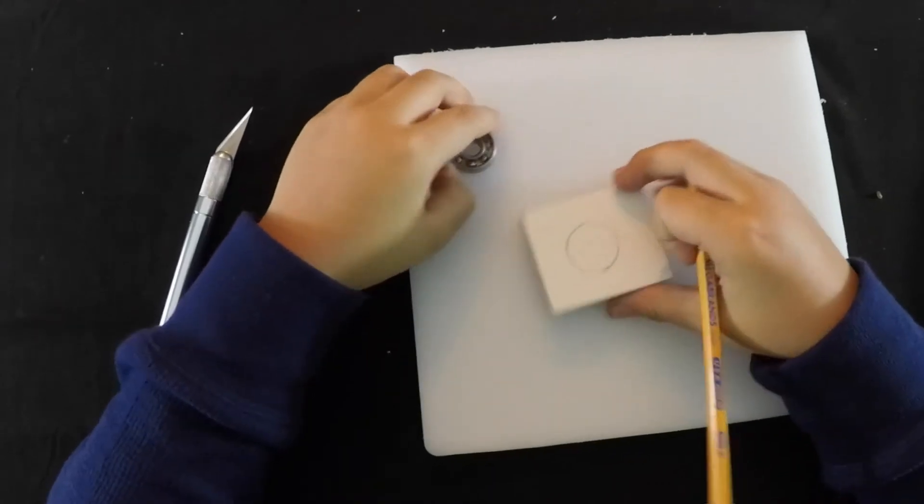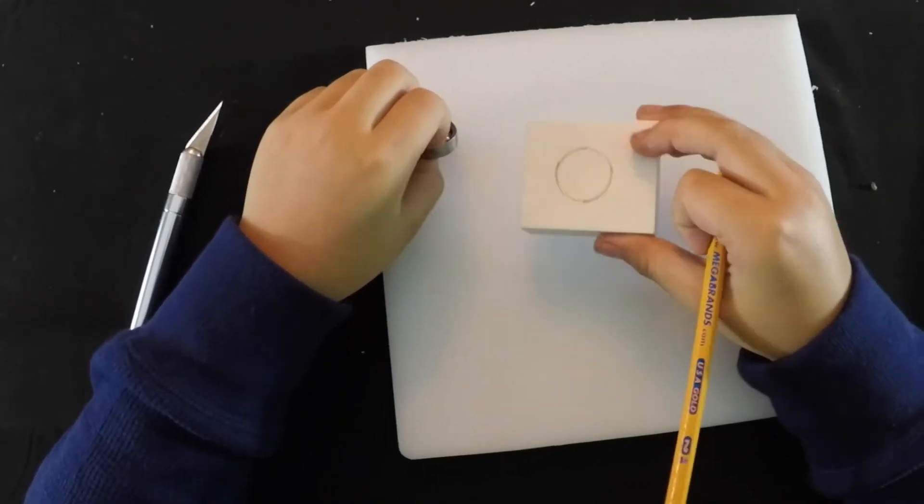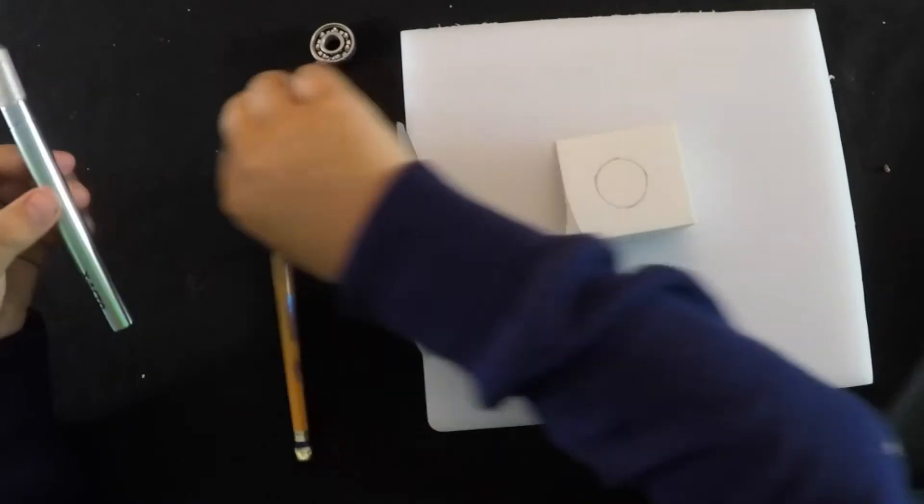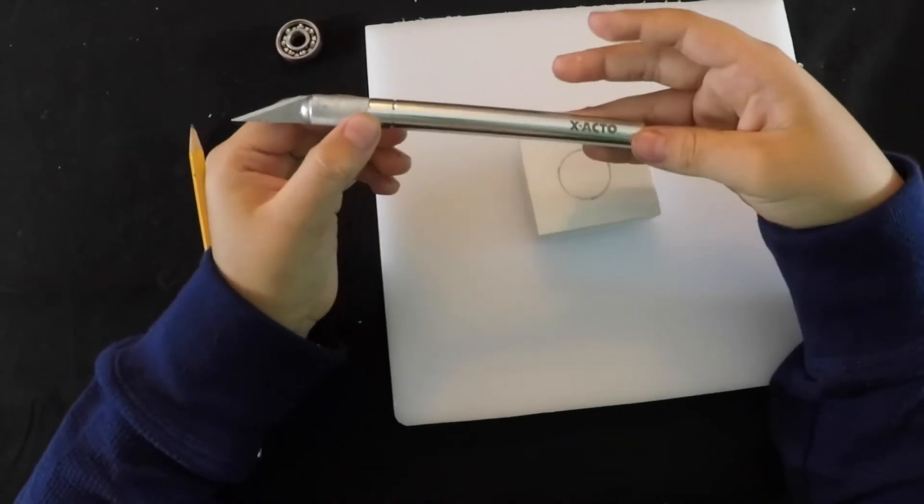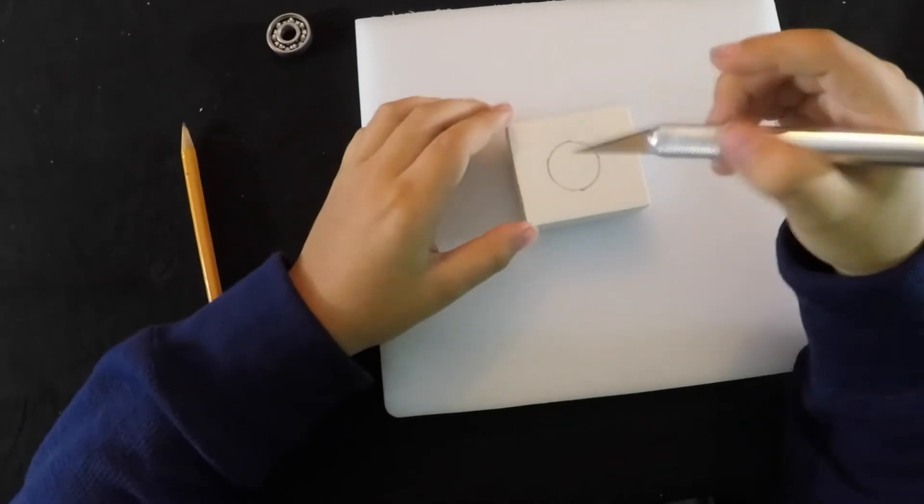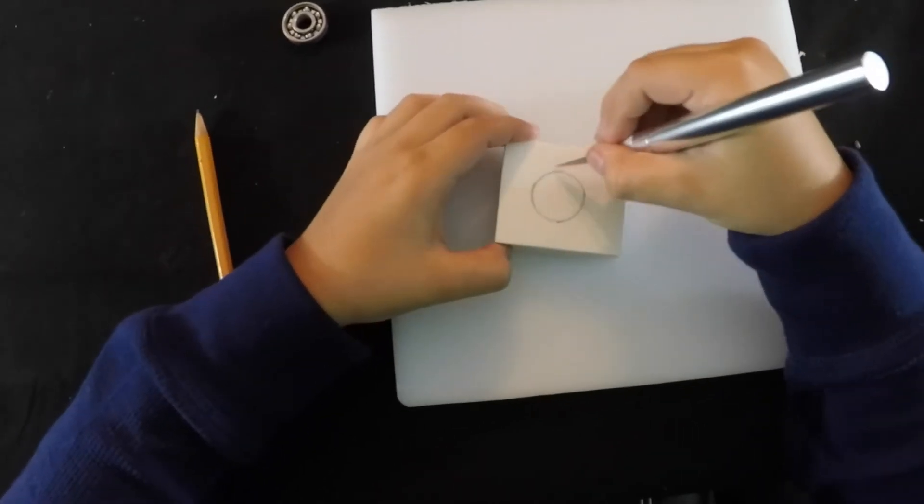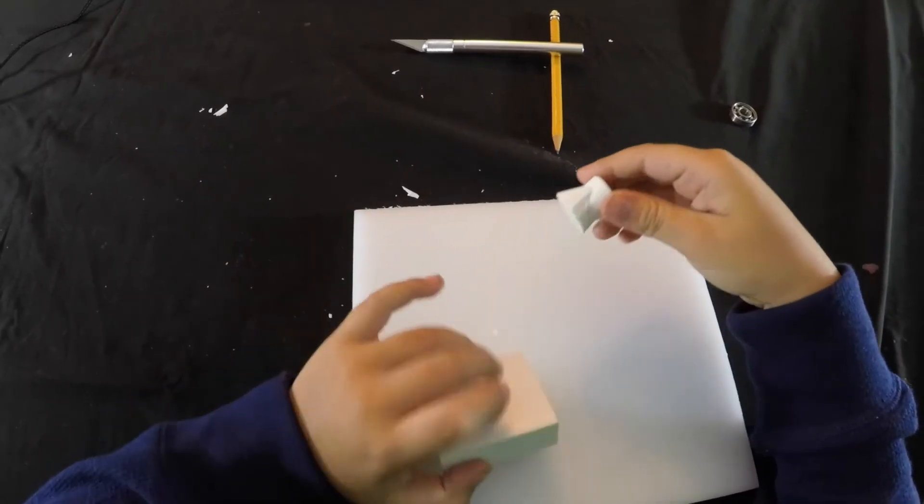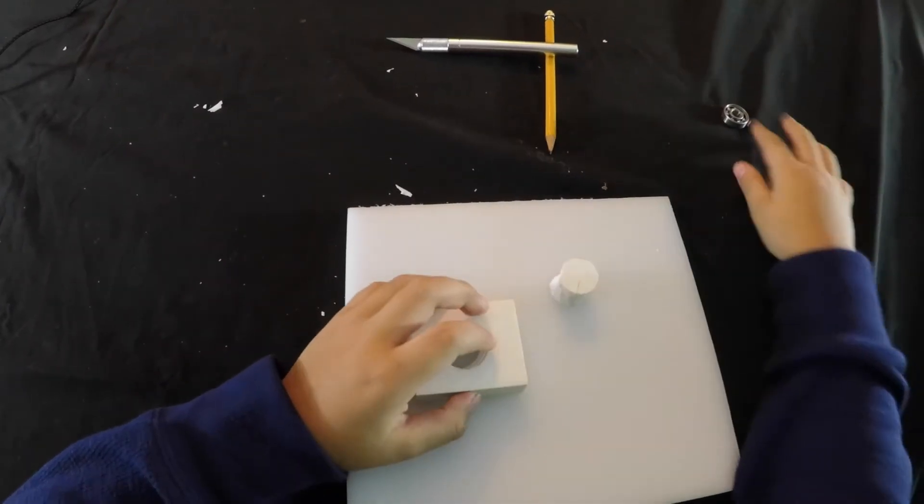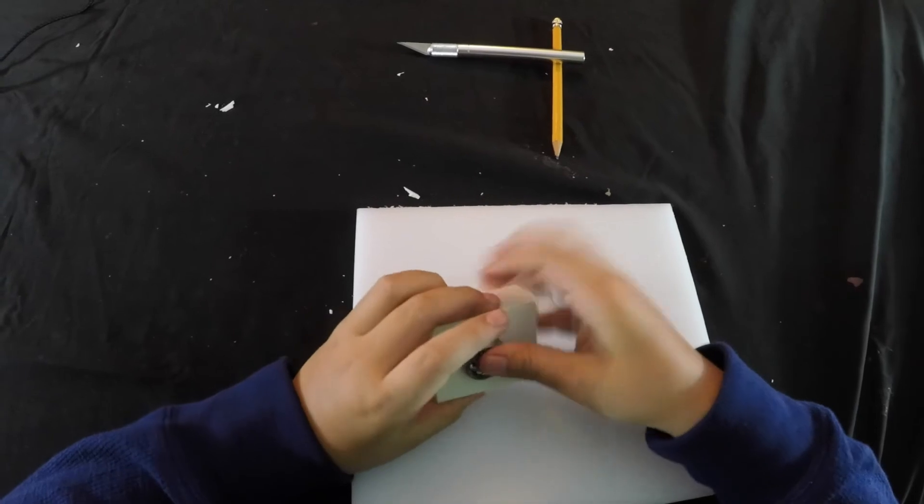And there you go, perfect circle. Now we're going to use the exacto knife and cut it in half like this. This is what it looks like when you finish cutting it. The final thing is to put the bearing inside.